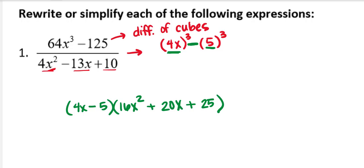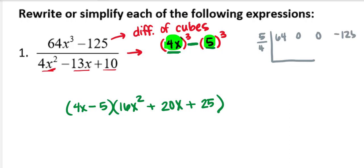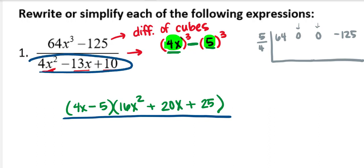If you don't have the formula memorized, another way is to find the zero: 4x minus 5 equals zero gives x equals 5/4. You can use synthetic division with the numerator 64x³ + 0x² + 0x − 125, remembering that synthetic division requires perfect descending order, so don't forget those zero coefficients. Now I need to factor the denominator, hoping that one of its factors matches and divides out.